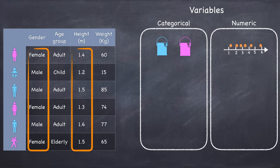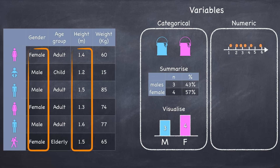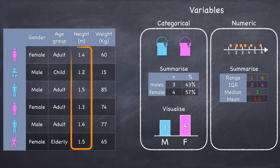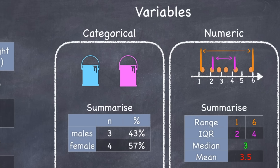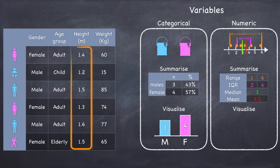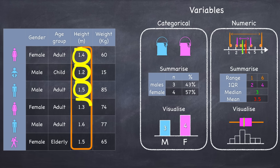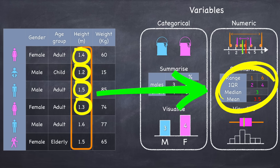To better understand our data and make sense of it, we summarize it and we visualize it. For categorical data, we can count up the number of observations in any given category and represent them in a table and on a bar chart. To summarize numeric data, we're interested in the spread or distribution — so we might describe the range, the interquartile range, and the standard deviation. To get a sense of the middle of the data, we use the median, which divides the data into two equal halves, and the mean, which is the average. We can visualize our data using a box plot, which represents the range, the interquartile range, and the median, and we can also create a histogram, which gives us the shape of the data. This process of summarizing and visualizing turns numbers and words on a spreadsheet into something meaningful that we can think about.